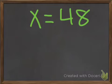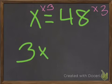So I'm going to multiply this equation by 3. So I'm going to multiply the x by 3, I'm going to multiply the 48 by 3. So our new equation will equal 3x equals 144.